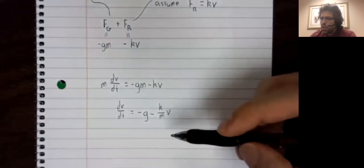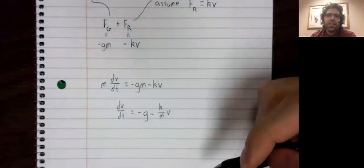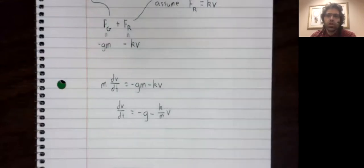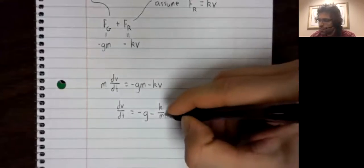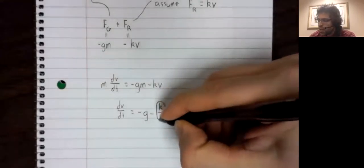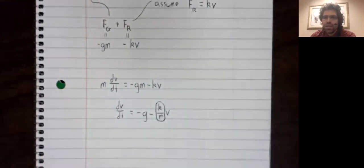Now, assuming that the object isn't changing its shape, so like assuming you're not deploying a parachute, and assuming that the object's mass is constant, K divided by M is just a constant.